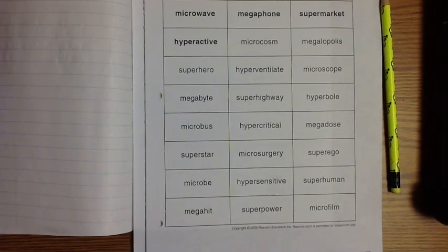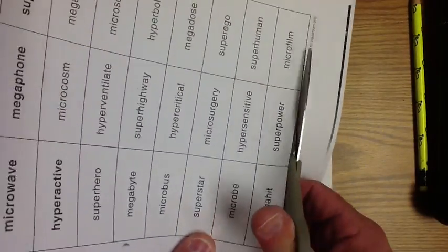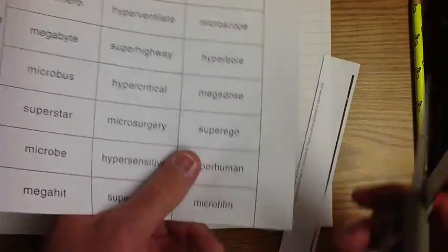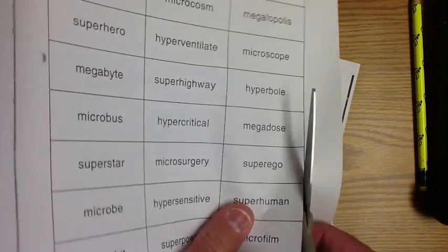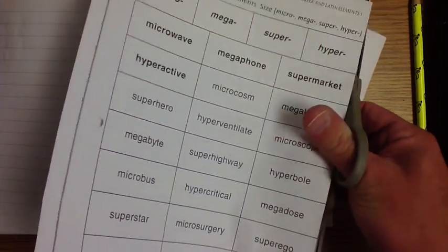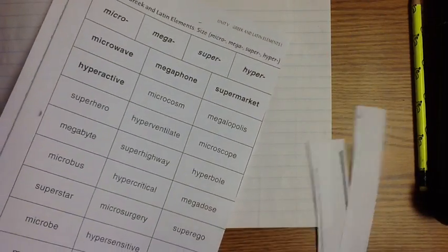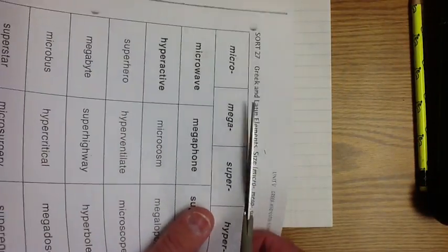All right, so let's get started. We're going to start by cutting our words out. And it looks like we've got some interesting words this week. I'm pretty excited about these because we're working on Greek and Latin words. So you're going to learn a little Greek and Latin while you've been learning it.